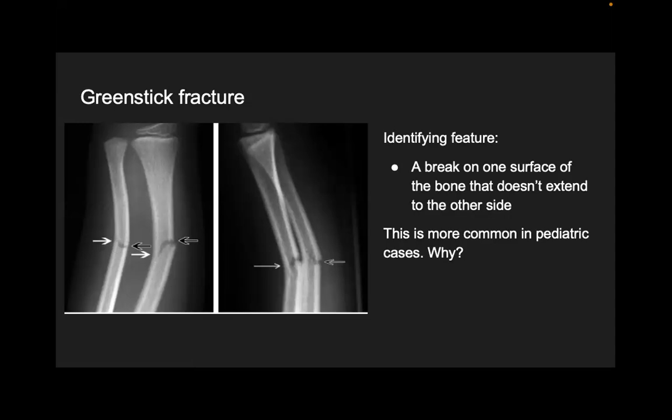Greenstick fractures are more common in pediatric patients because their bones are still growing and not fully hardened — they're more malleable, like a green tree branch that breaks on one side but remains intact on the other. Because of this malleability, pediatric bones are more prone to incomplete injuries. Pediatric patients also have tremendous bone healing potential — even with severe fractures, they can look completely normal within a few months.